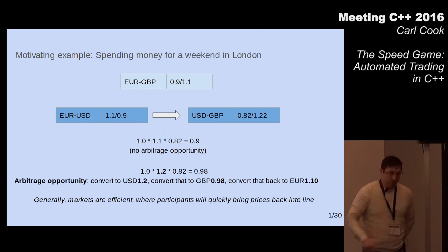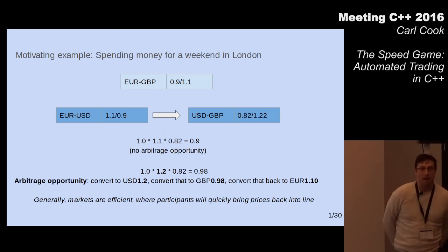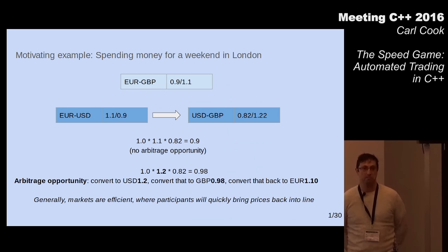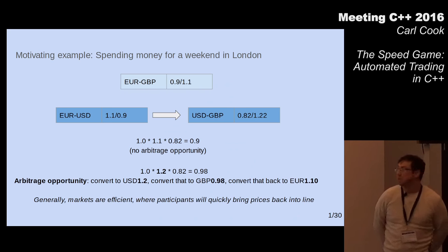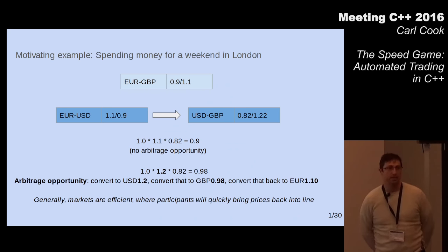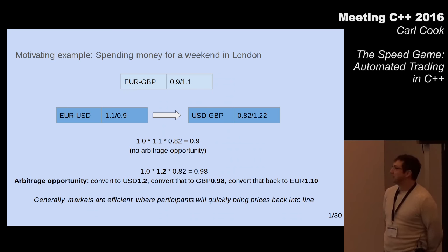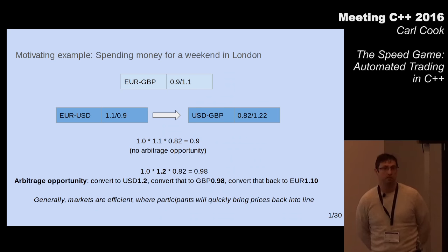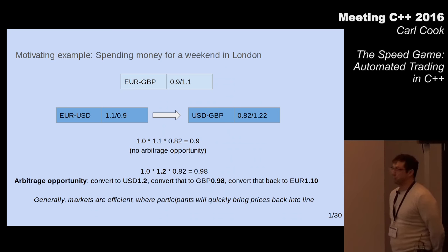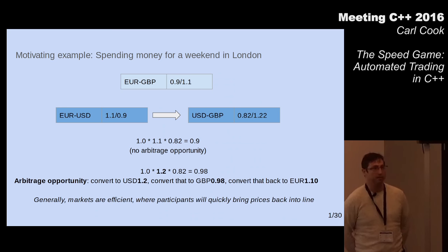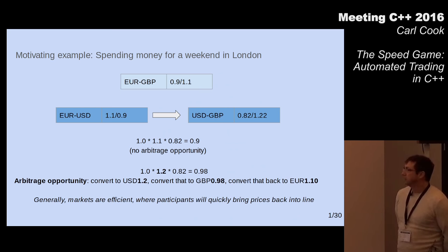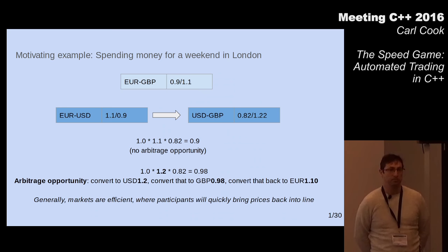As a motivating example of what a trading company might do, let's say you want to convert euros to pounds for a UK holiday. You go to your bank and get 90 pence back per euro. But if you look at other rates — euro to US dollar and US dollar to British pounds — doing both conversions also works out at 90 pence. Which makes sense.